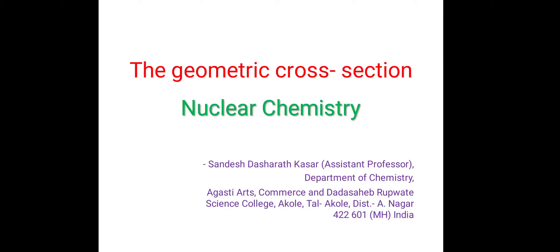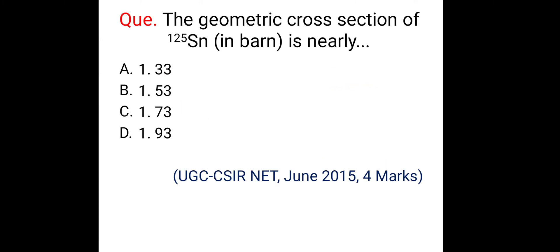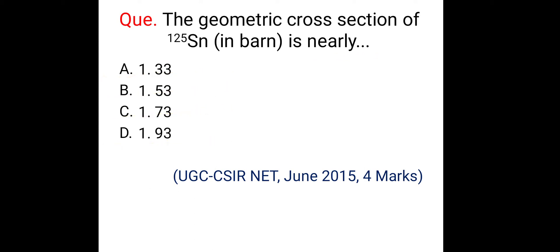Hi, welcome. Today we are going to study an important topic from nuclear chemistry for the NET-SET gate examination in clinical sciences. The topic is the geometric cross-section. There was one question asked for four marks in June 2015 UGC CSIR NET examination. The question was: the geometric cross-section of Tin-125 in unit barn is nearly — and four options were given. So here we have to find out what is the geometric cross-section of Tin-125.